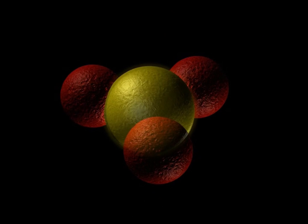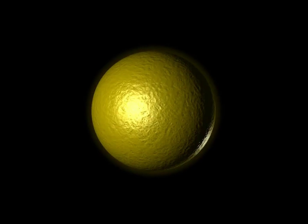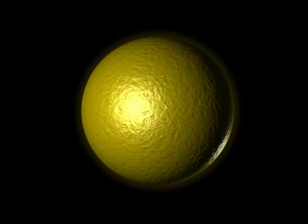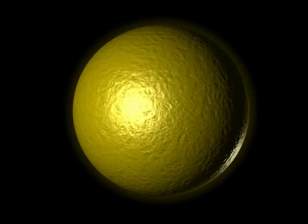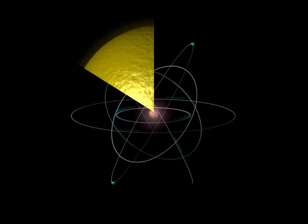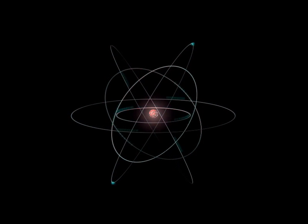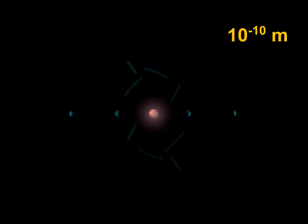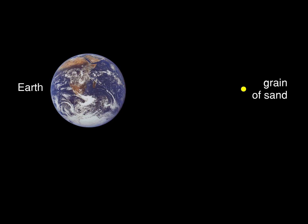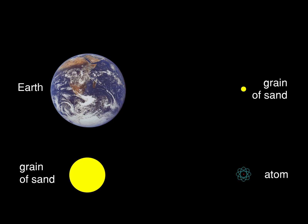Somewhere at a very small scale there is something which the ancient Greeks named the atom. An atom is extremely small. It is 10 to the minus 10 meters across. It is hard to imagine, so let's use an analogy. A grain of sand is so many times smaller than the Earth as the atom is smaller than a grain of sand.